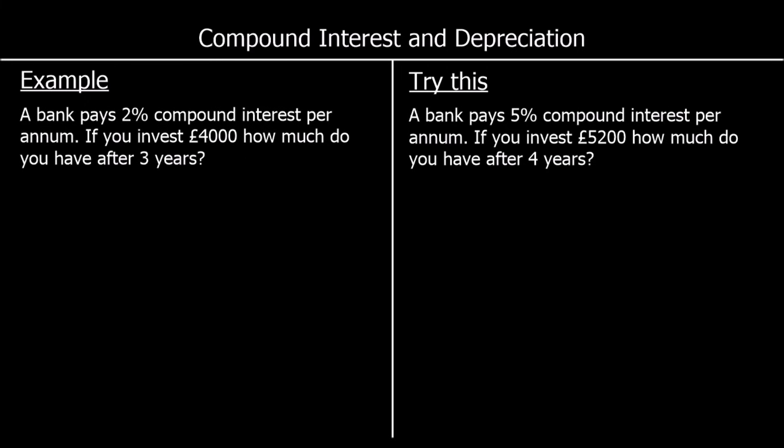Compound interest is a repeated percentage change where the amount of interest you get increases every year. In this example, we've got a bank paying 2% compound interest per annum — per annum means per year. So what we don't do is work out what 2% is and then multiply that by 3. That would be simple interest. With compound interest, the amount of interest increases every year — it's not the same amount.